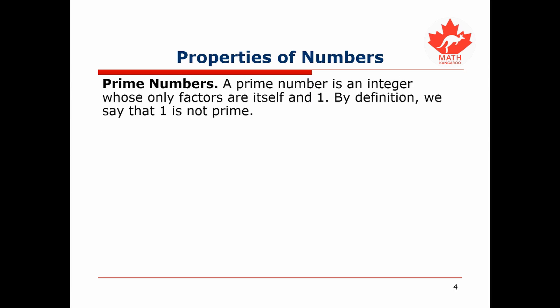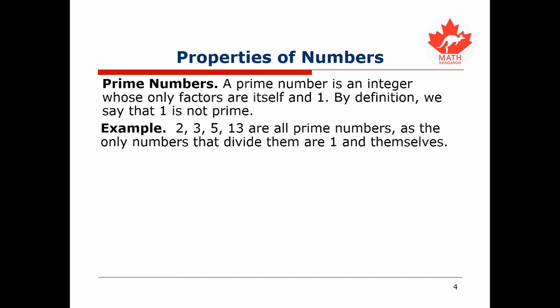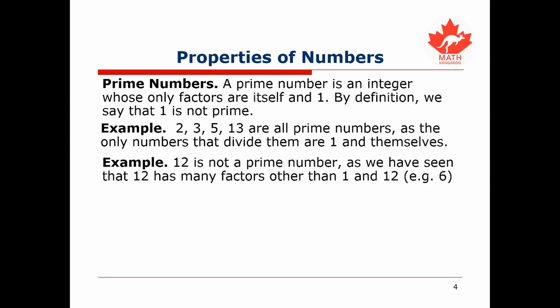Another very important concept is that of prime numbers. A prime number is an integer whose only factors are itself and 1. By definition, the number 1 is not prime. Examples of prime numbers are 2, 3, 5, and 13, as all these numbers only have divisors 1 and themselves. An example of a number that is not prime is 12, because 12 has many divisors that are not itself or 1, such as 6.